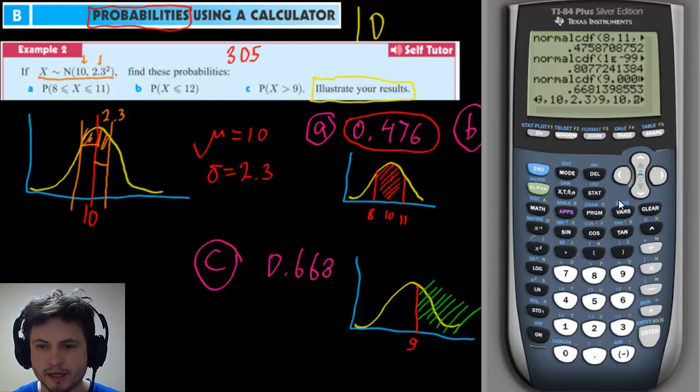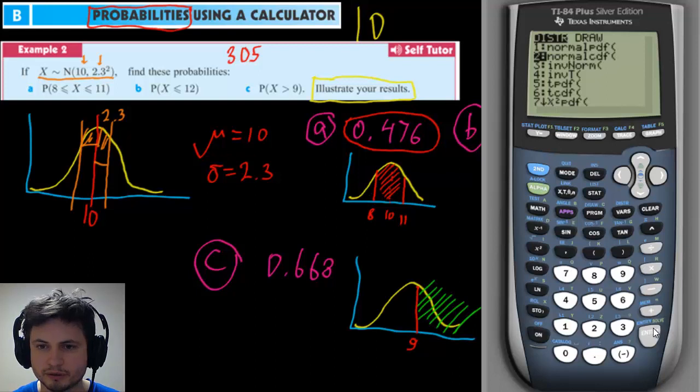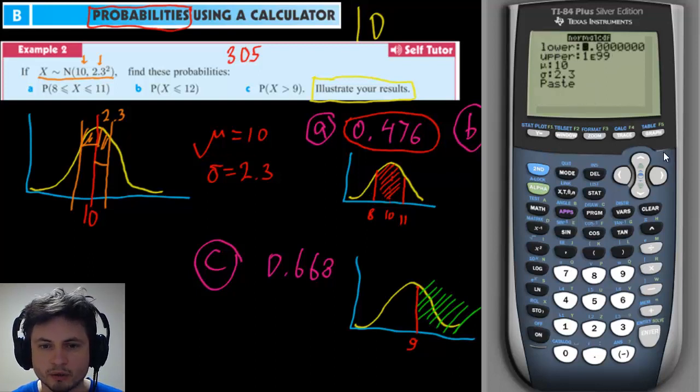So for some calculators you may actually have to enter this manually but for newer calculators you just click on this and it gives you the table like this. Okay so that's it for probabilities using the calculator from chapter 10 thank you for watching thank you for watching and good luck to you and bye-bye.